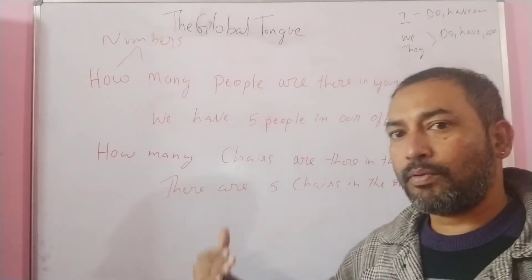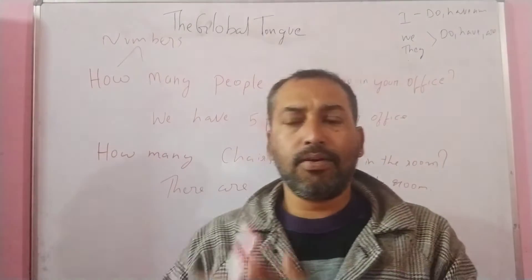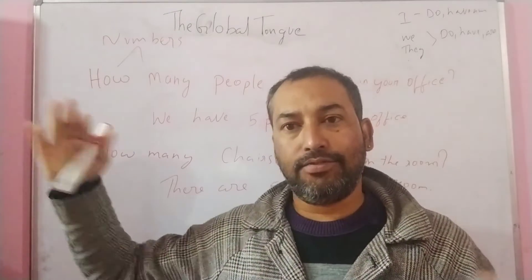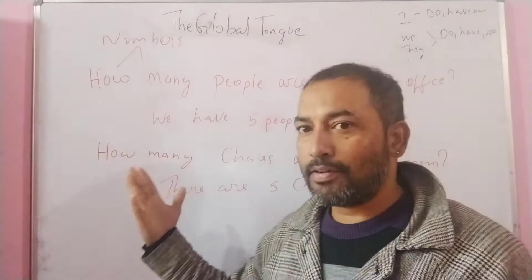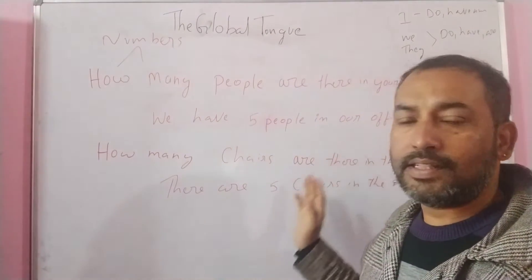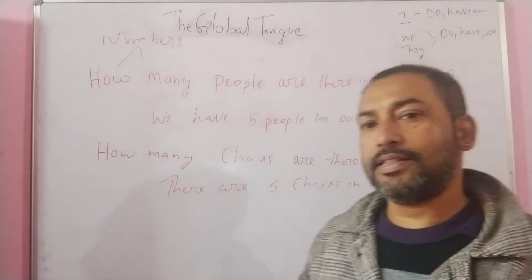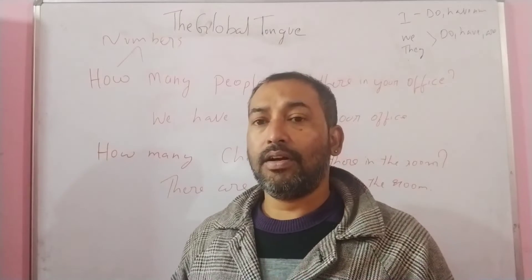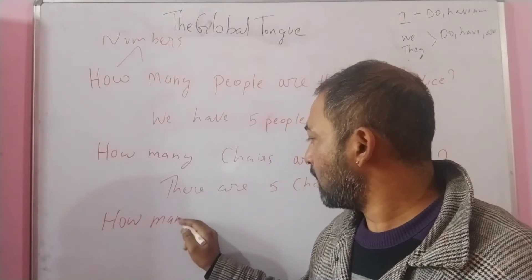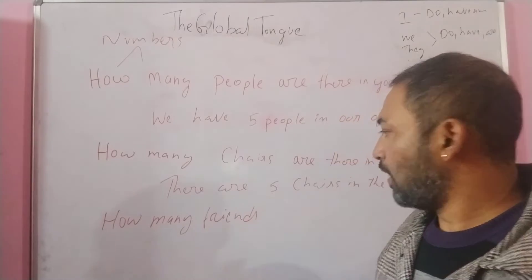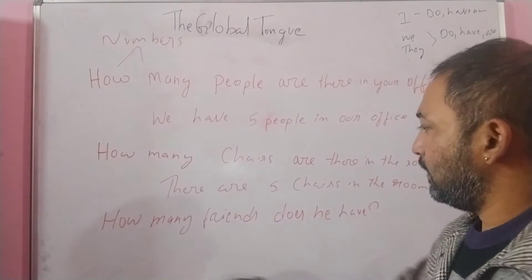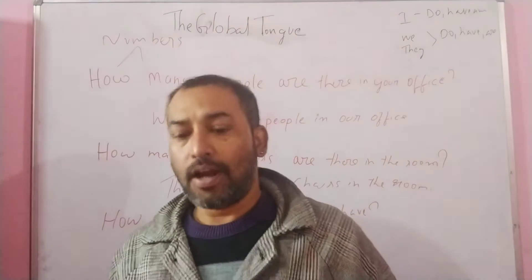Now, whenever you ask the same question about a third person — let's say you have a friend and you want to know how many things he has — how do you frame it? 'How many mobiles does he have?' — 'He's got eight mobiles.' Or 'How many friends has he got?' — 'How many friends does he have?' — 'He has got a lot of friends.' Or 'How many girlfriends does he have?'